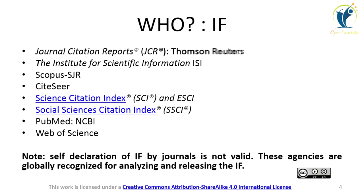The agencies which provide the impact factor include the Journal Citation Reports (JCR), Thomson Reuters, the Institute of Scientific Information (ISI), and Scopus. Science Citation Index, Social Science Citation Index, PubMed, and Web of Science are the indexing services. Apart from these, several other indexing agencies exist such as Scopus, Embase, Chemical Abstracts, Index Copernicus, Cite Factor, International Pharmaceutical Abstracts, Indian Citation Index, and Google Scholar. Once a journal is indexed in reputed indexing services, the agencies keep track of citations and publications and then provide the impact factor from time to time.